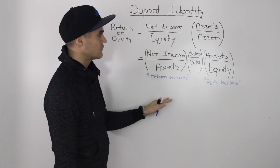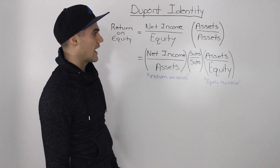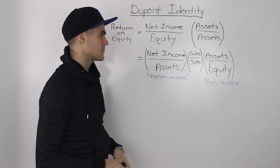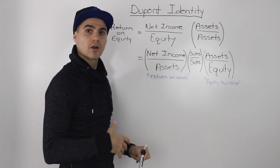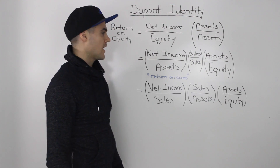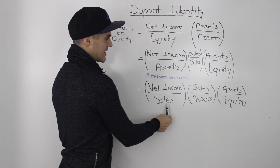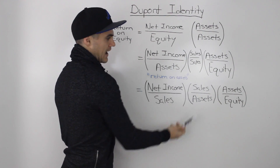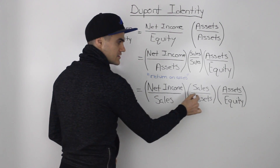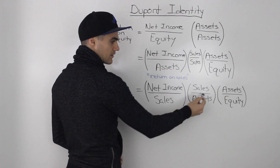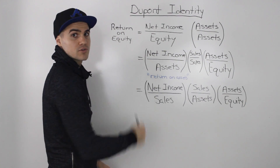Now, the return on assets can be broken down even further. We add sales over sales — just like we added assets over assets earlier. Sales is the figure from the income statement, and this is just multiplying by one, so there are no changes, but we're adding this extra element of sales or revenue. Mixing up the fractions, we get net income over sales, times sales over assets, times assets over equity. When we multiply these three fractions, sales cancels out and assets cancels out, leaving us with net income over equity — our original return on equity.